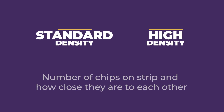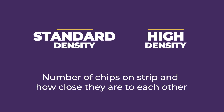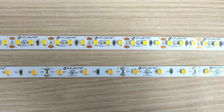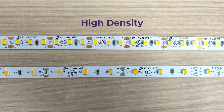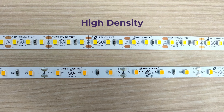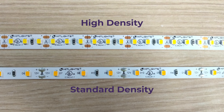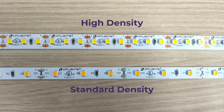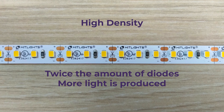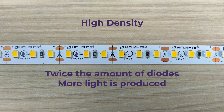Standard density and high density refers to the number of diodes or LED chips on a strip and how close together they are. The diodes on the high density LED strip light are much closer together than they are on the standard density LED strip light. High density strips have twice the amount of diodes, which means there's twice as much light being produced.